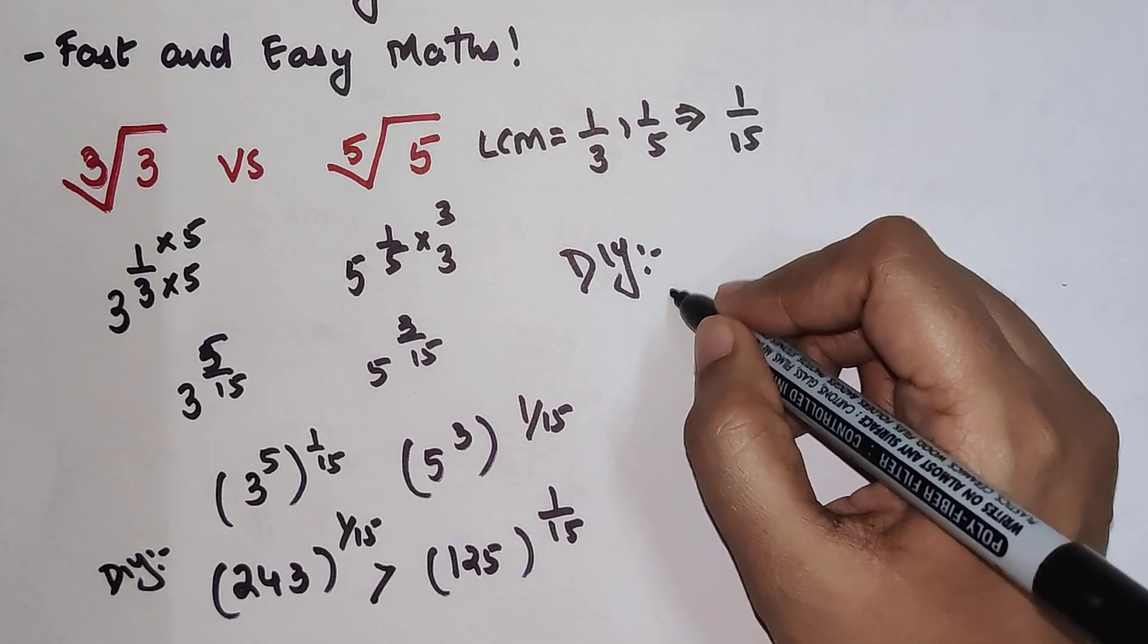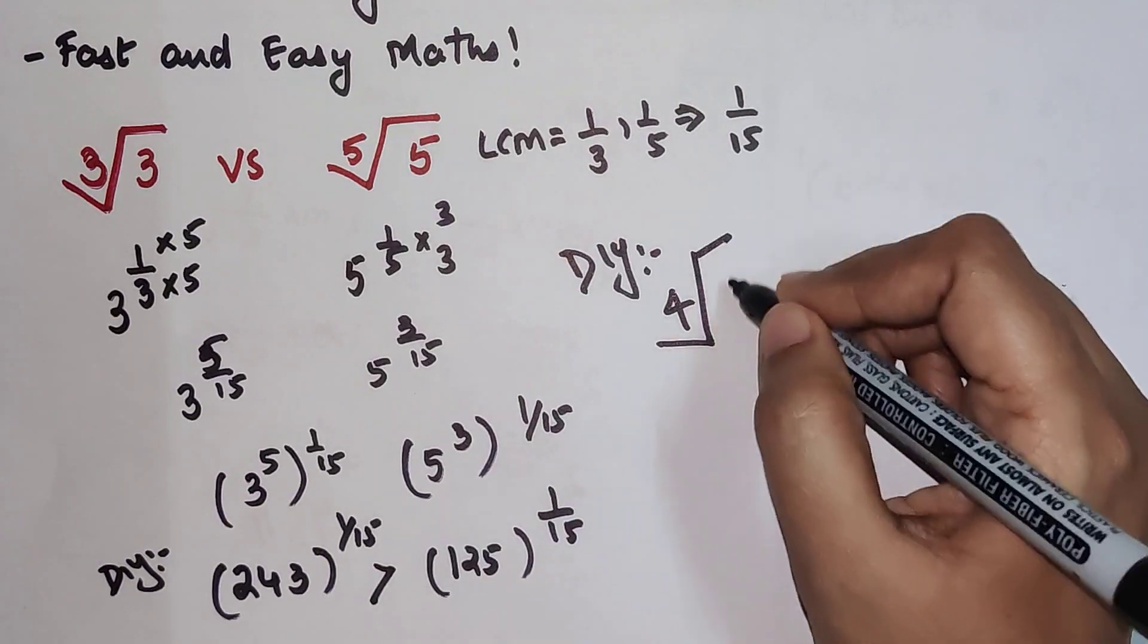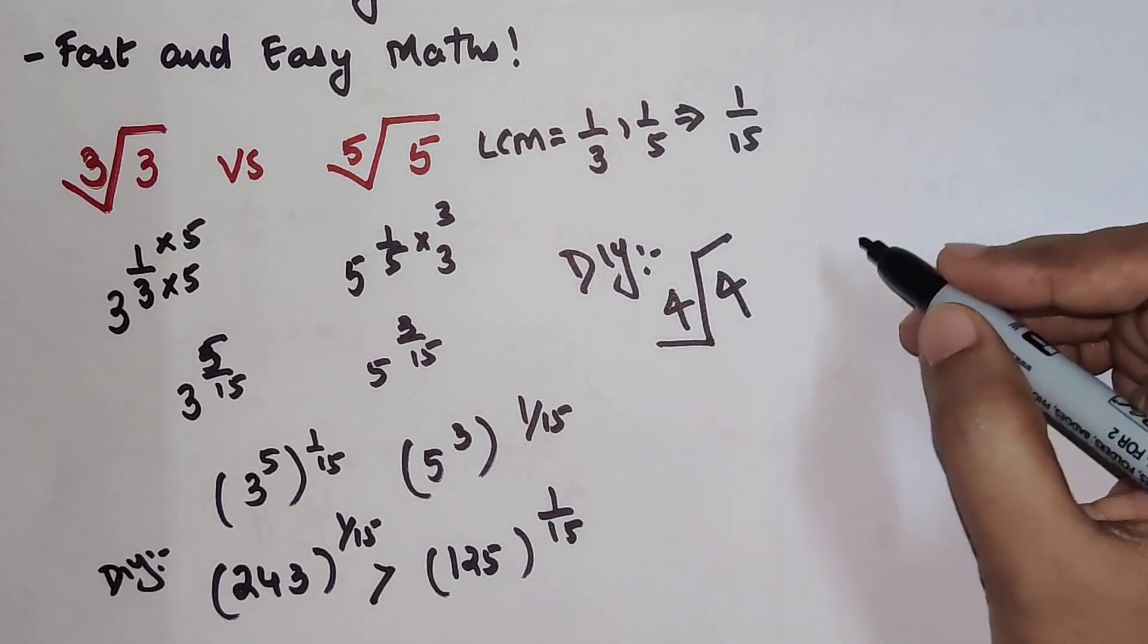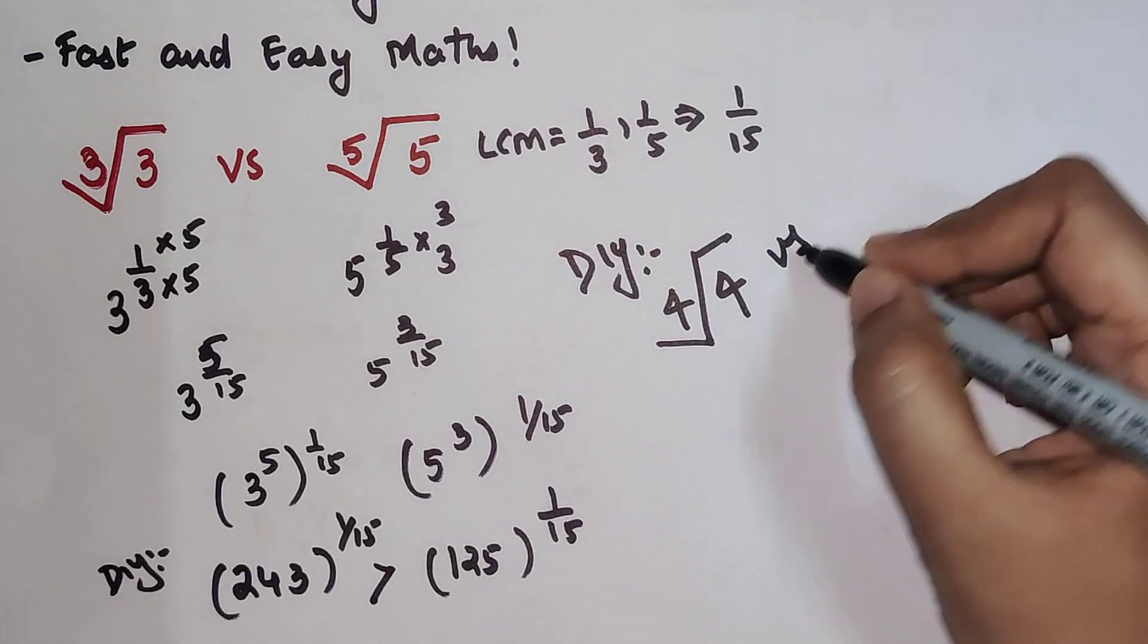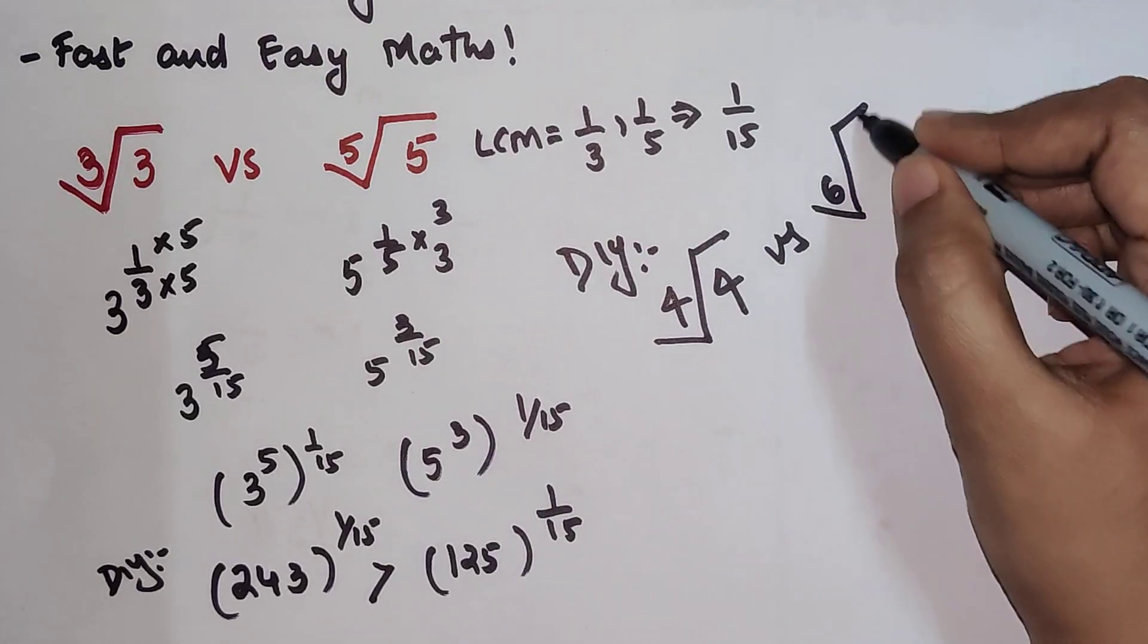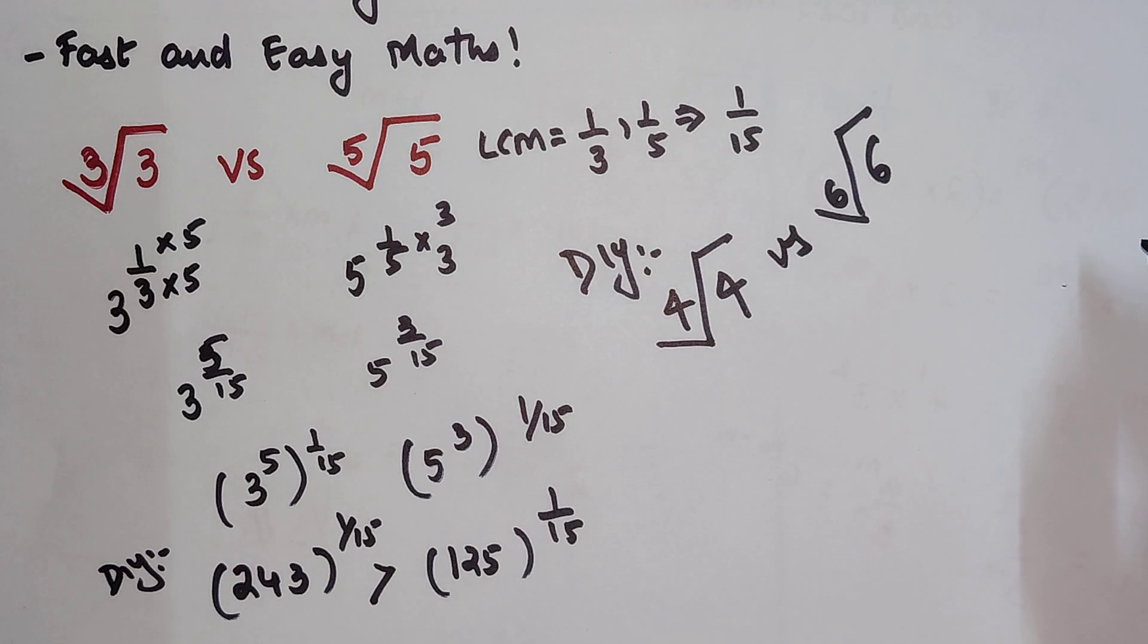You have to tell me which is the greater one: 4th root of 4 versus 6th root of 6. Do let me know your answers in the comment section. That's it for today, I will see you in the next video.